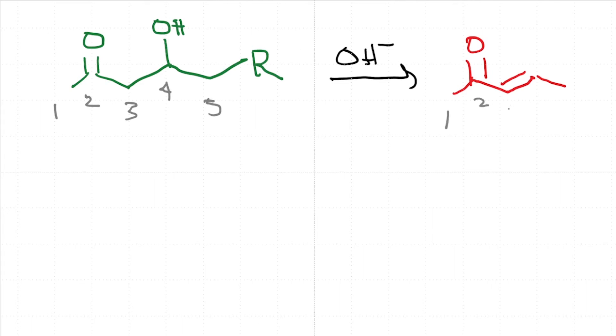So 1, 2, 3, 4, 5, and this is 6. You get this as the product. Now the important thing here is that the leaving group is the hydroxide, which is a pretty terrible leaving group.